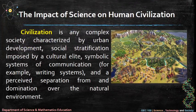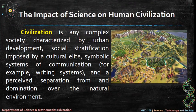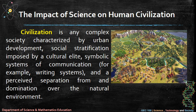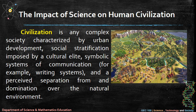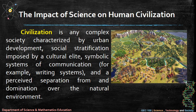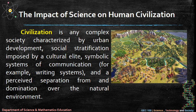The impact of science on human civilization: civilization is any complex society characterized by urban development, social stratification imposed by a cultural elite, symbolic systems of communication (for example, writing systems), and a perceived separation from and domination over the natural environment.